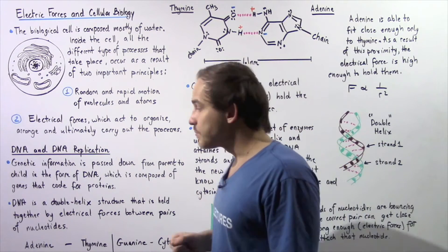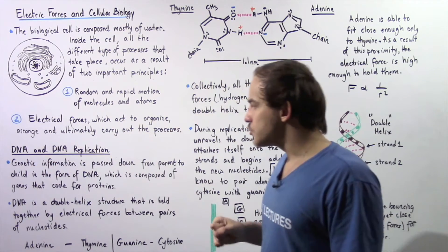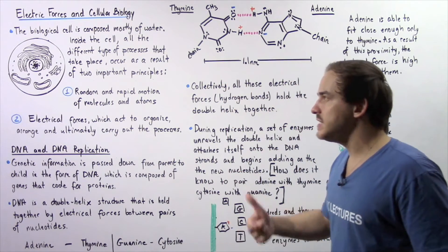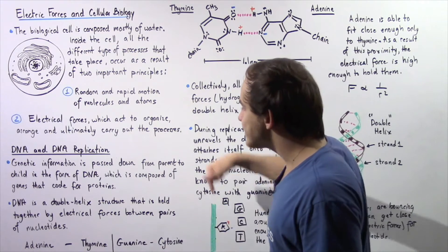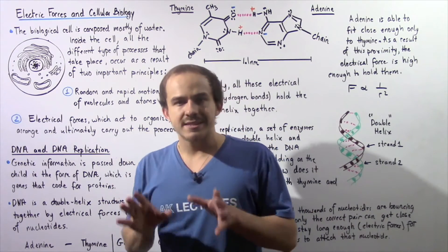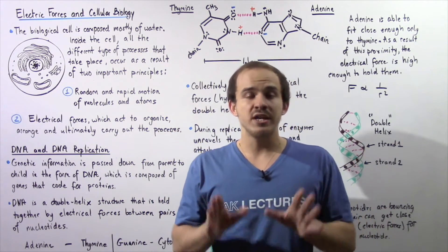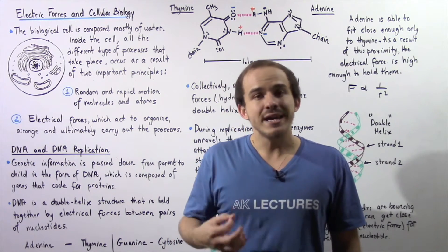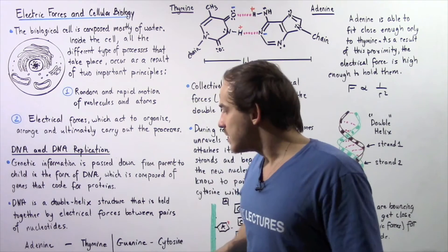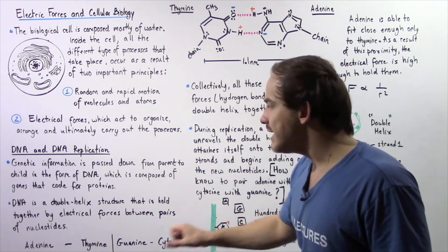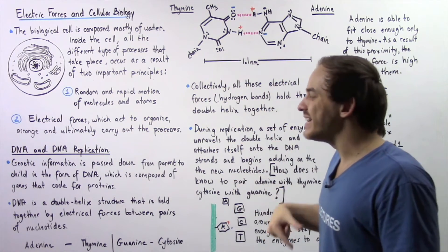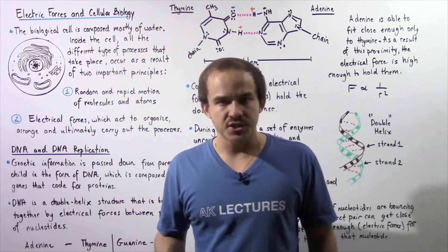So what exactly is DNA? Genetic information is passed down from parent to child, from one generation to the next, in the form of DNA — deoxyribonucleic acid — which is composed of genes that code for proteins. DNA is essentially a double helix structure in which we have two different DNA strands. Each DNA strand is composed of four types of molecules called nucleotides: adenine, thymine, guanine, and cytosine. DNA is a double helix structure that is held together by electrical forces between pairs of nucleotides.